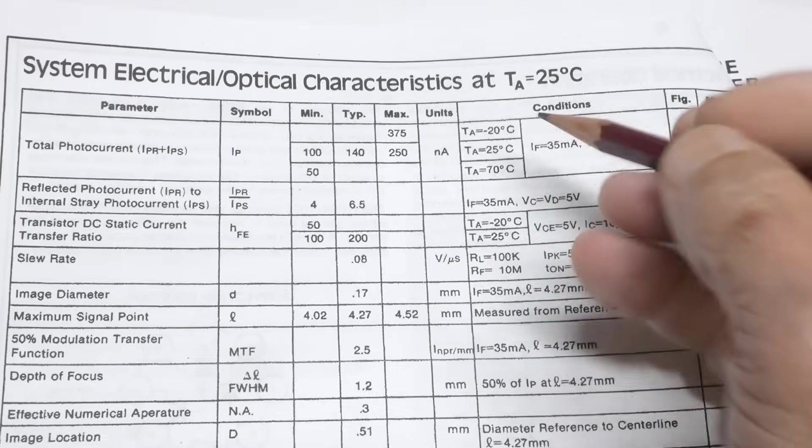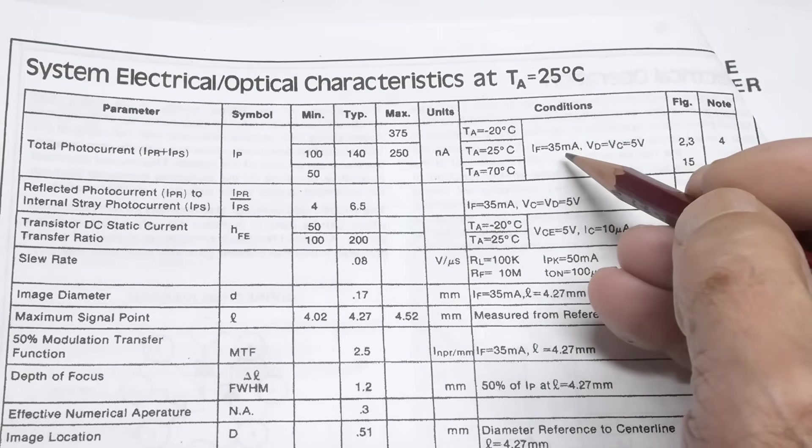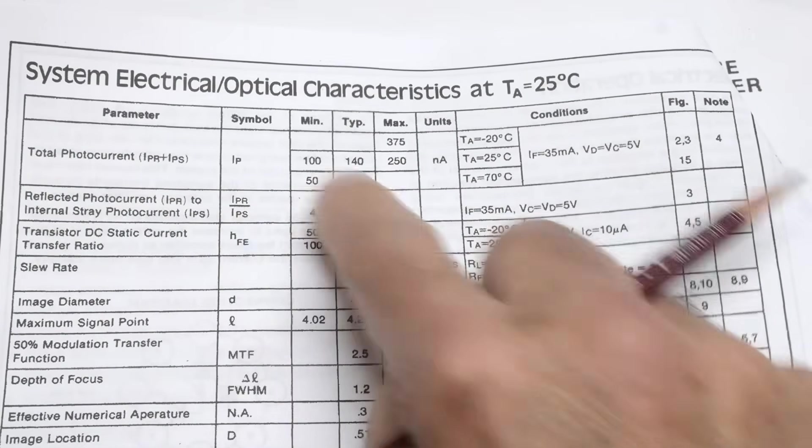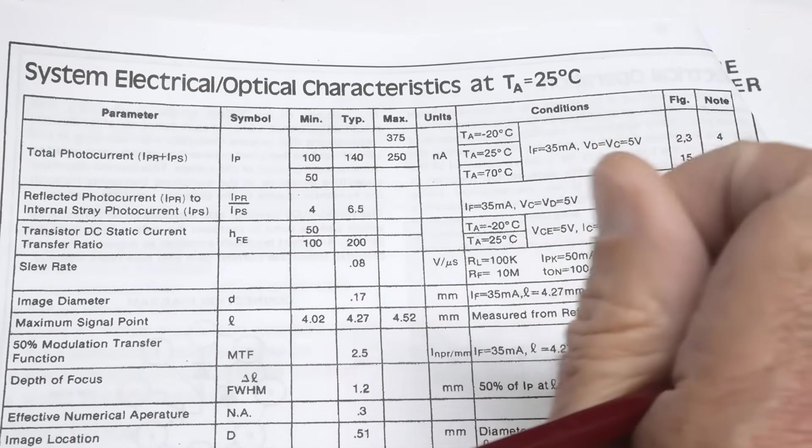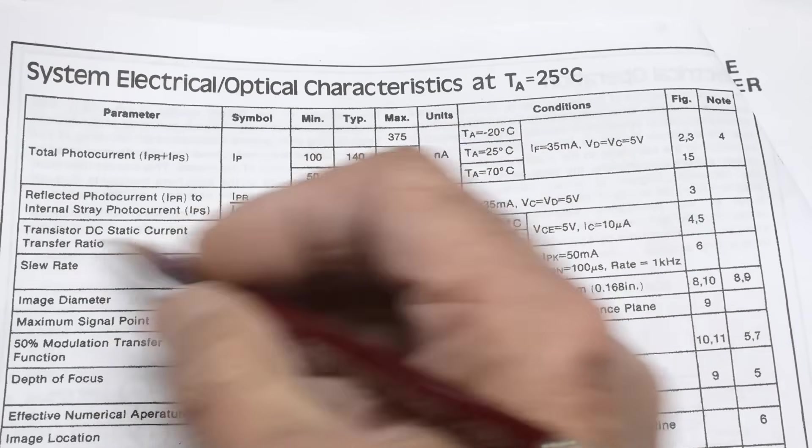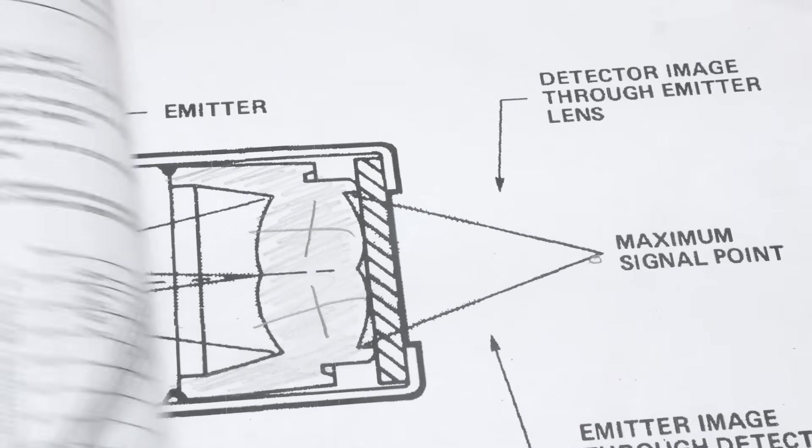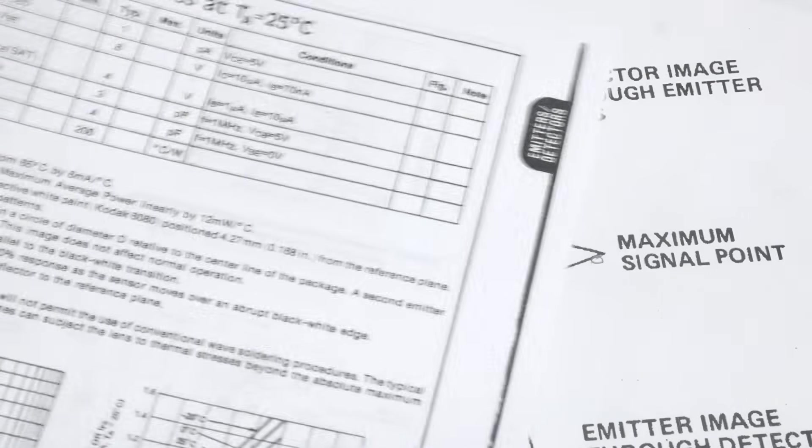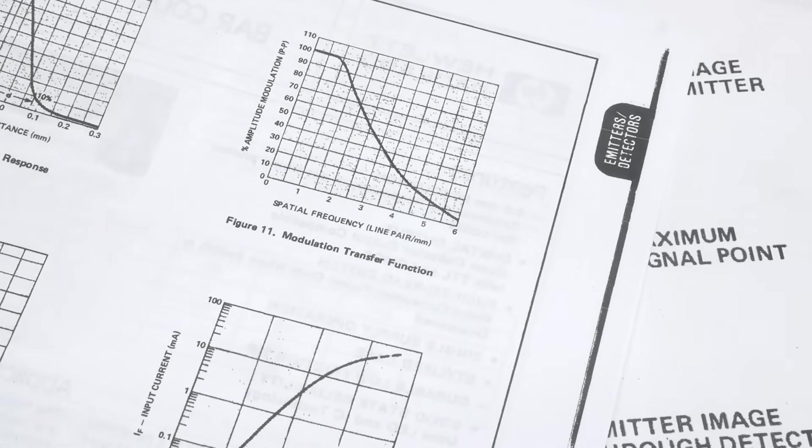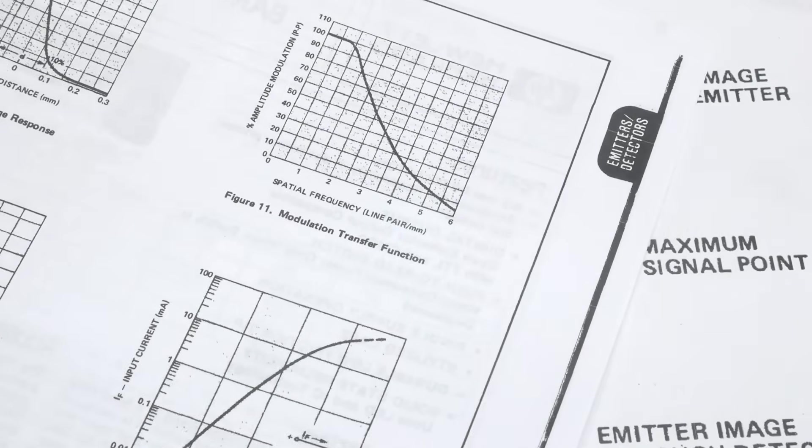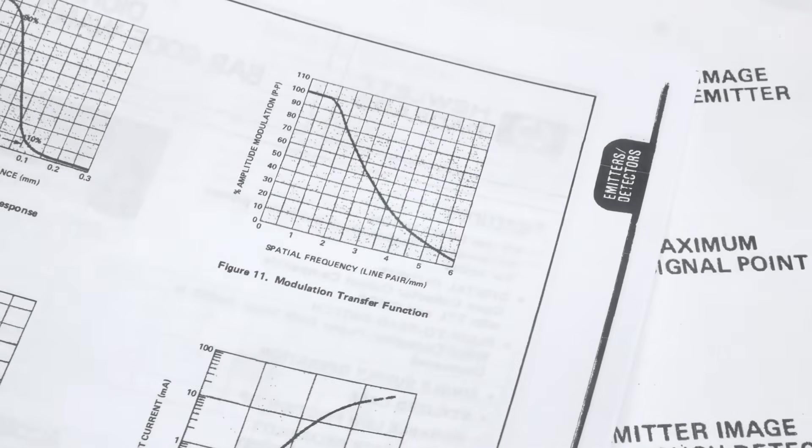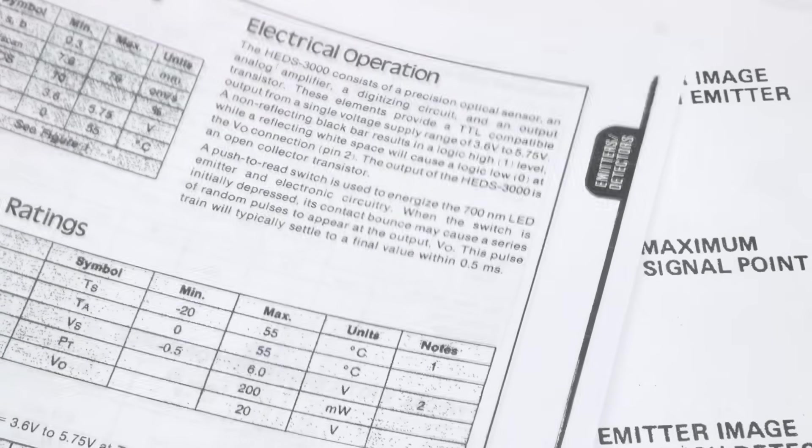The specifications here. The LED's being driven at about 35 milliamps. And the photocurrent's about 140 nanoamps. The HFE of the transistor is about 200. Really, really, really interesting stuff. I think that's enough for the datasheet here.